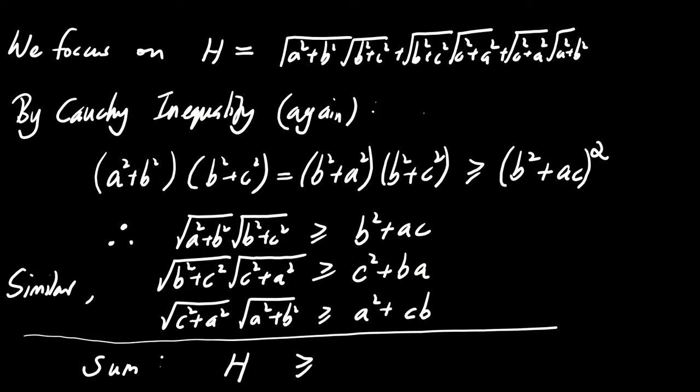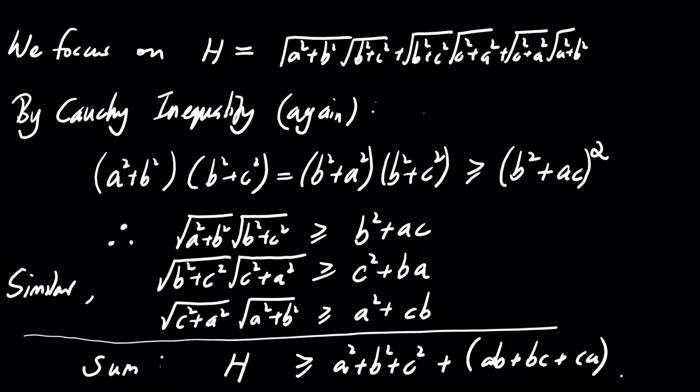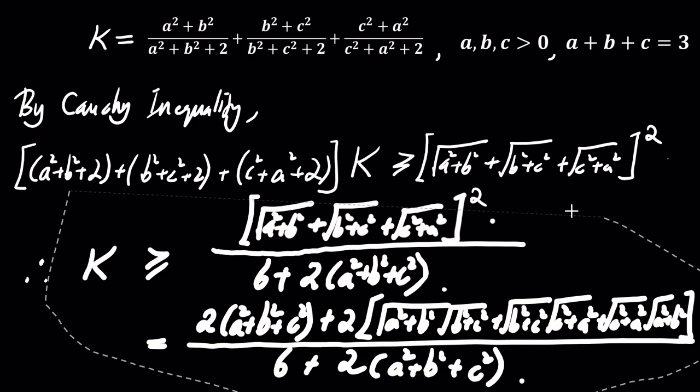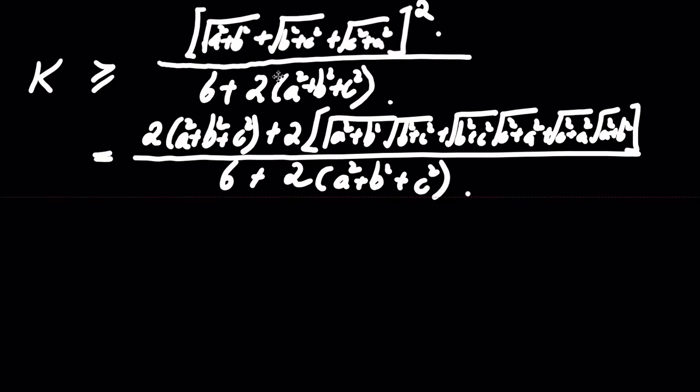Summing these, we get h is greater than or equal to the sum of A squared plus B squared plus C squared plus AB plus BC plus CA. This bound on h will further help us bound K.